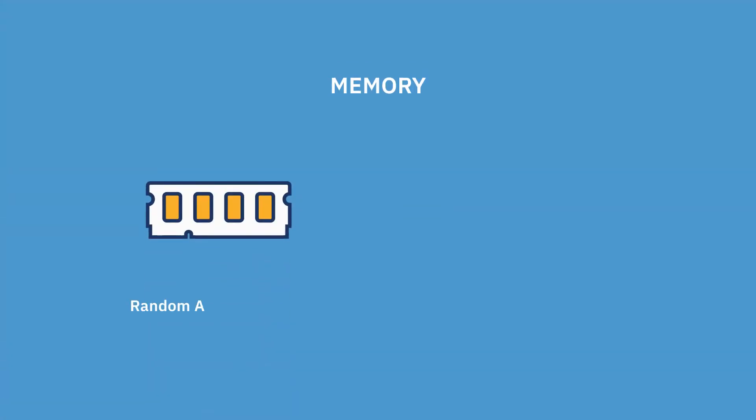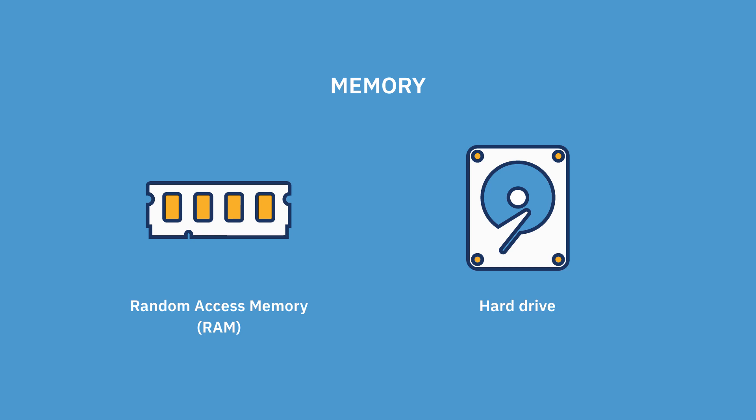The CPU runs all the processing programs, but they have to be stored somewhere — that's where memory comes in. There are two forms of memory on a computer: random access memory (RAM) and a hard drive, or hard disk drive. Random access memory is your computer's short-term memory; things stored in RAM are only remembered as long as the RAM has power. If your computer has ever crashed or unexpectedly shut down and you lost your work, that's because it was stored in RAM — when the RAM loses power, it forgets everything.